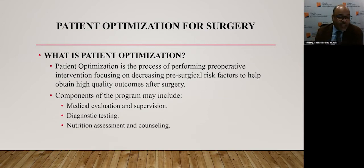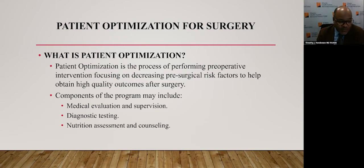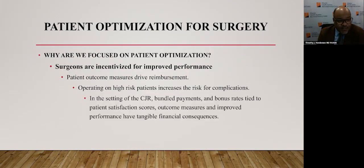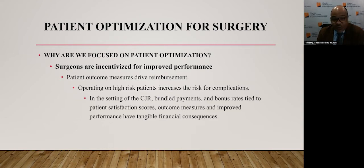Patient optimization for surgery — what is it? It is the process of performing preoperative interventions focusing on decreasing presurgical risk factors to help obtain high-quality outcomes after surgery. Components may include medical evaluation and supervision, diagnostic testing, and nutritional assessment and counseling. Why are we focused on patient optimization? It improves patient outcomes, increases surgeon reimbursement, decreases the cost of providing services, and better outcomes lead to greater patient satisfaction. Surgeons are now incentivized for improved performance — patient outcome measures drive reimbursement. Operating on high-risk patients increases risk for complications, and in the setting of the CJR, bundled payments and bonus rates tied to patient satisfaction scores, outcome measures and improved performance have tangible financial consequences.